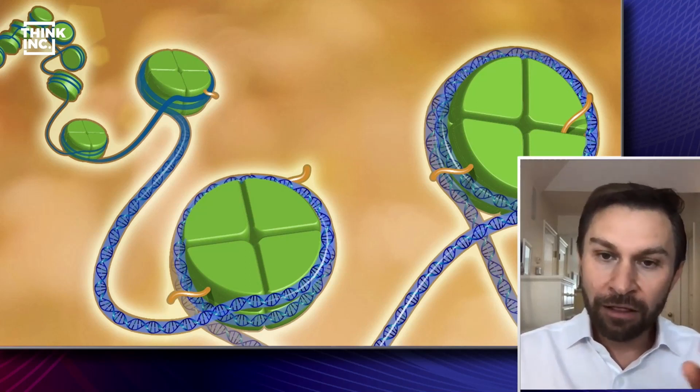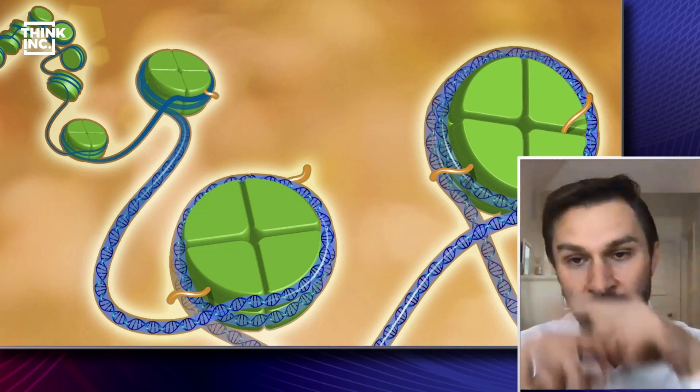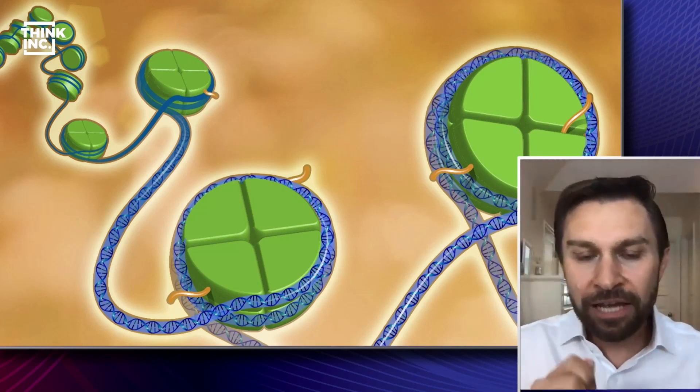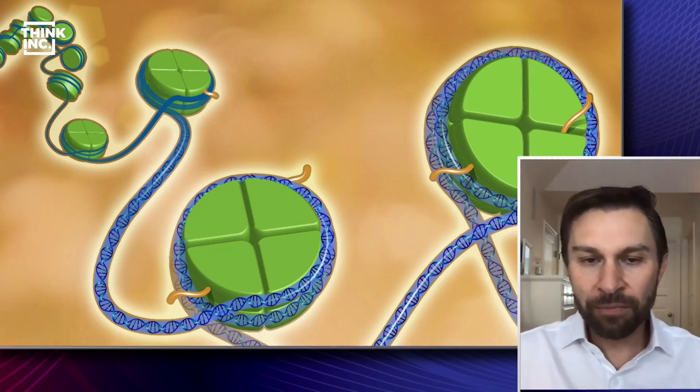Those tags are really important. They tell the cell whether to bundle up the DNA or to loop it out and turn the genes on. And so that's how the cell controls whether a cell is going to be a nerve cell or a liver cell or something else.